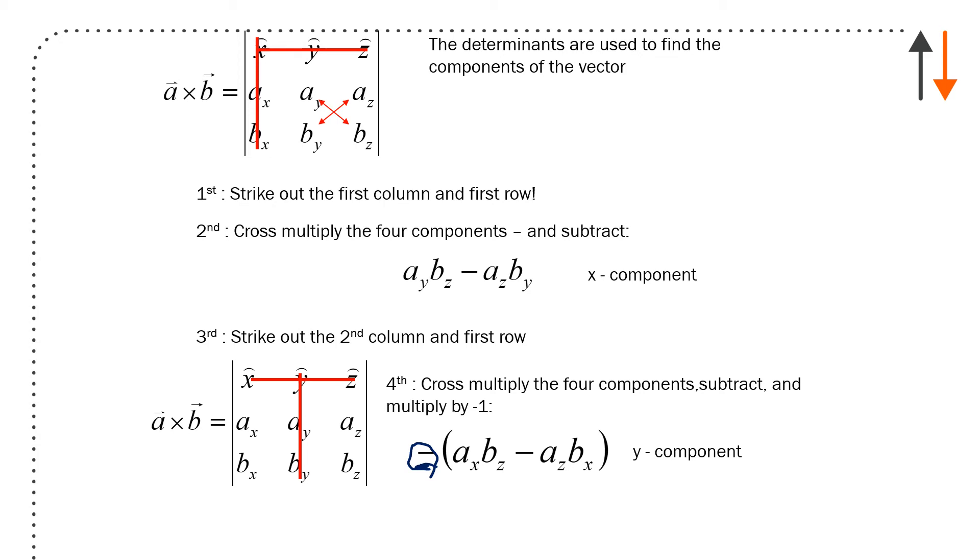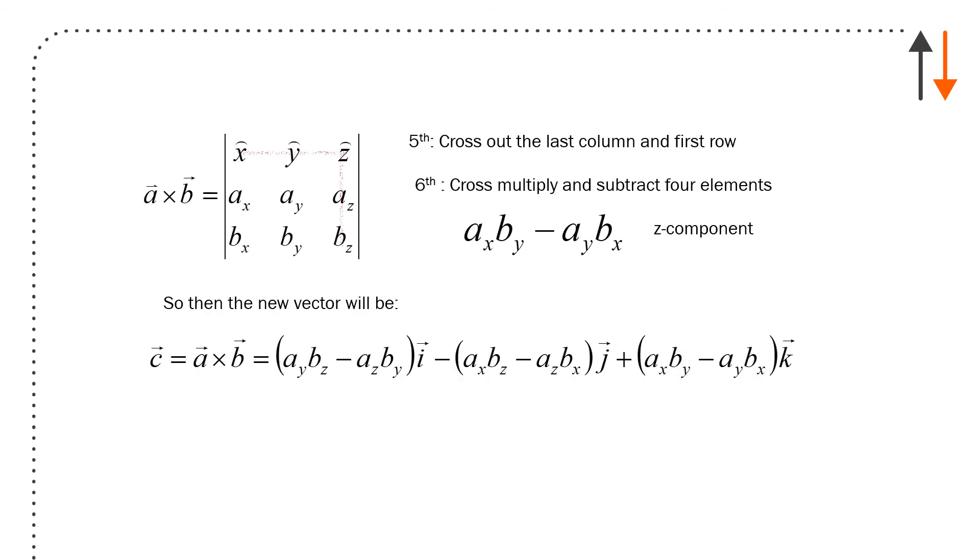And then finally, you cross out the last row, and you get the relationship AX, BY, minus AY, BX. And your vector product, or your cross product, C, A cross with B, is AY, BZ, minus AZ, BY, in the I direction, minus AX, BZ, minus AZ, BX, J direction, AX, BY, minus AY, BX, in the K direction. So all together, you then have a relationship that you can use, and you will use a lot in the second half of the course, particularly.